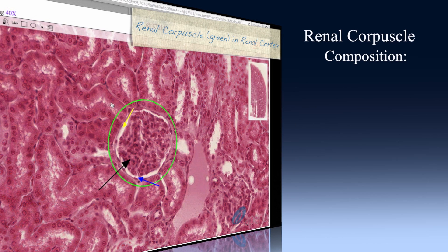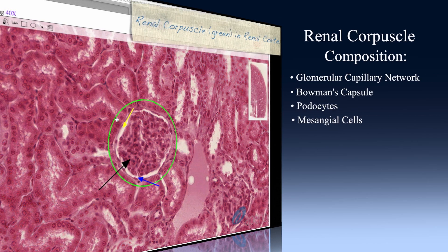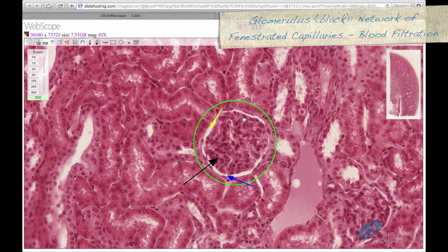The renal corpuscle is composed of the glomerular capillary network, Bowman's capsule, podocytes, and mesangial cells. The glomerulus, seen here at the black arrow, is a network of fenestrated capillaries which allows for filtration of blood.